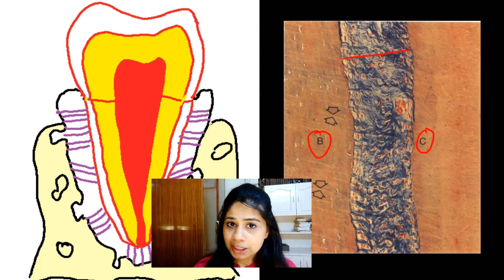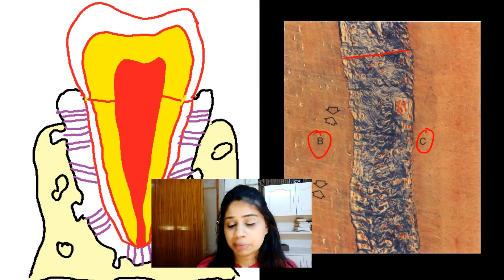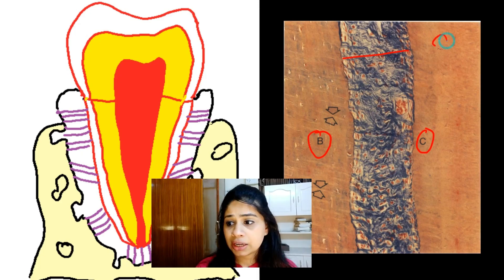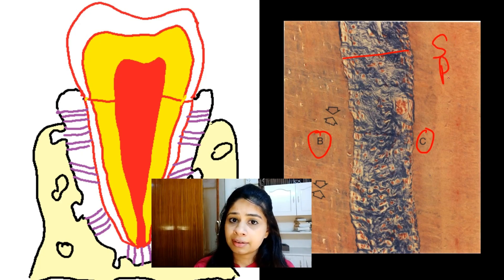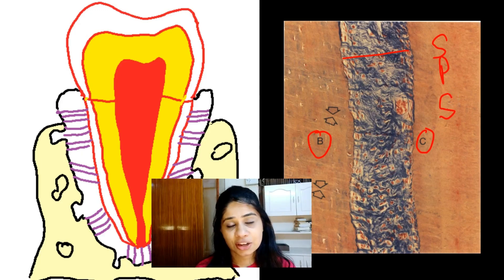Because the periodontal ligament is present between the bone and the cementum, its basic functions are to offer support, offer protection, and provide sensory innervation to facilitate the process of mastication.